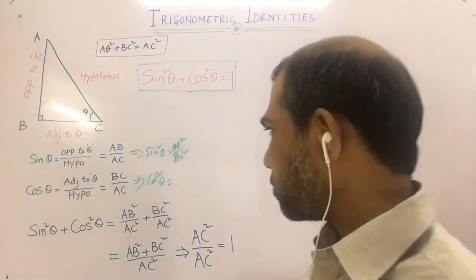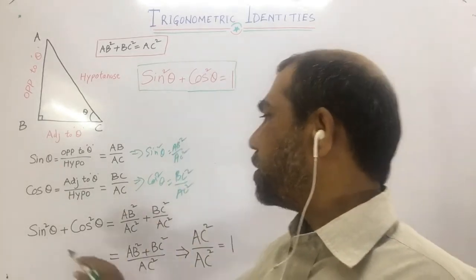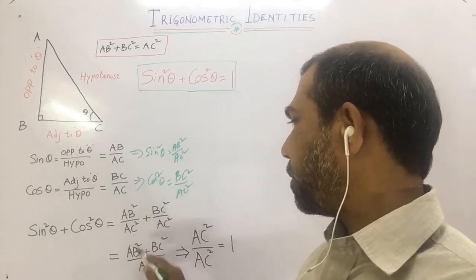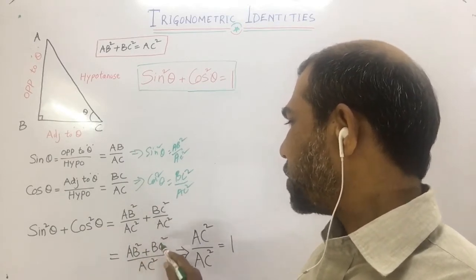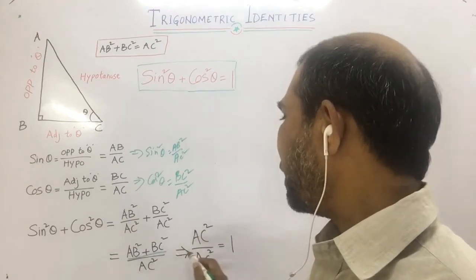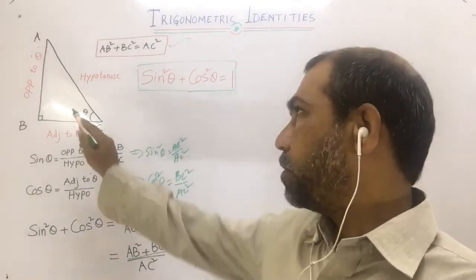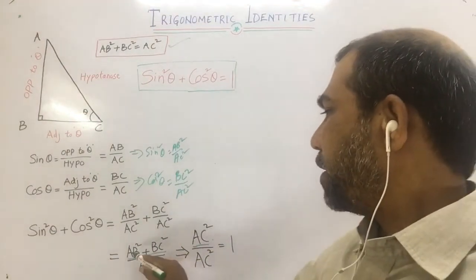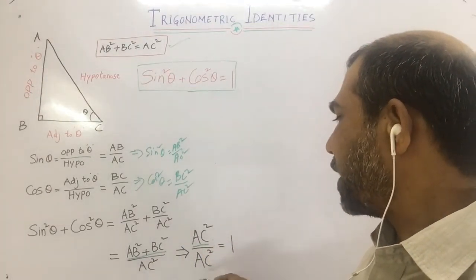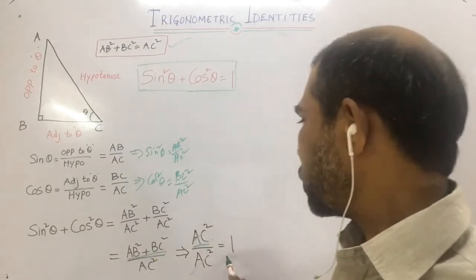Taking the square of cos θ, cos²θ = BC²/AC². Now adding sin²θ + cos²θ gives (AB² + BC²)/AC². We replace AB² + BC² with AC² from the Pythagoras theorem, giving AC²/AC², which cancels to 1. Therefore sin²θ + cos²θ = 1.